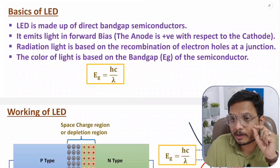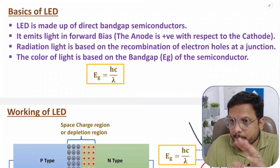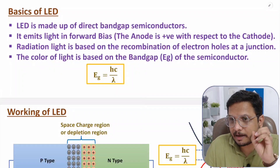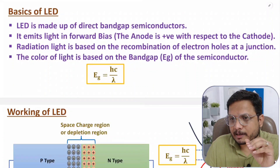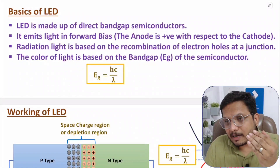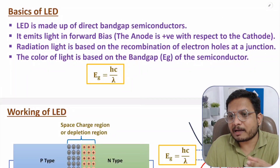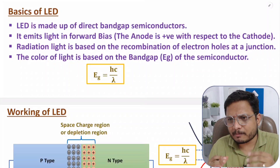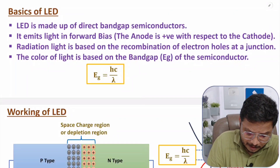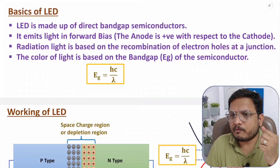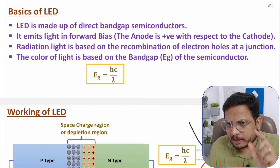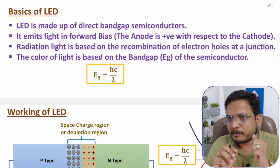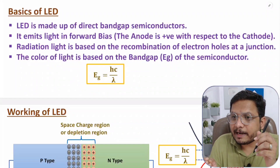LED is not made up of silicon and germanium. Silicon and germanium are indirect band gap semiconductors. LED is made up of direct band gap semiconductors. In that, we have compound semiconductors like gallium arsenide, gallium phosphide, gallium arsenide phosphide, aluminum gallium arsenide. There are varieties of compound semiconductor materials by which we can fabricate LED. LED will emit light in forward bias, where the anode is connected with the positive terminal of the battery and cathode with the negative terminal.